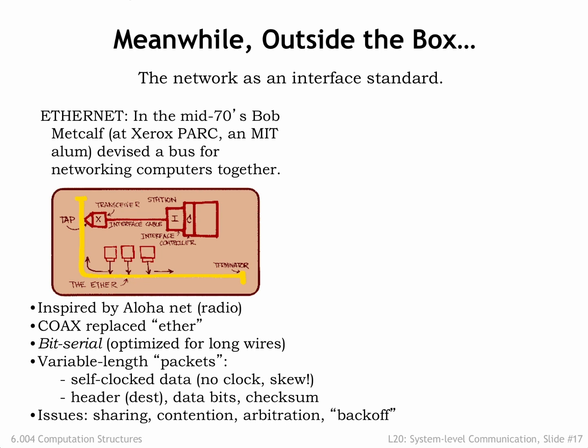In early networks, information was sent as a sequence of bits over the shared communication medium. The bits were organized into packets, each containing the address of the destination. Packets also included a checksum used to detect errors in transmission, and the protocol supported the ability to request the retransmission of corrupted packets.